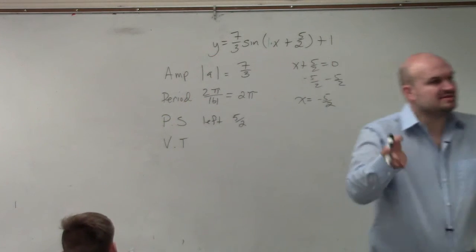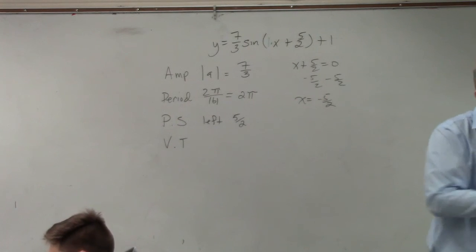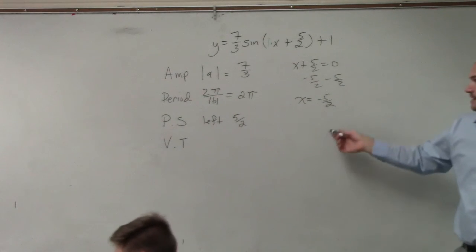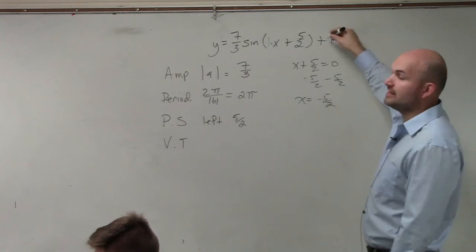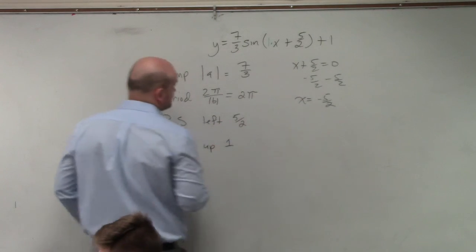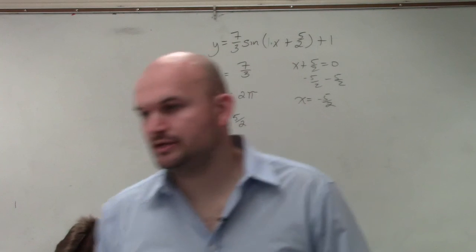And that's why when something's positive inside the function, it's a shift to the left, because the value of it is actually negative being shifted over to the left. But you could say it's left 5/2, and then we have our vertical translation is going to be up 1. That's it. That's all we need to do.